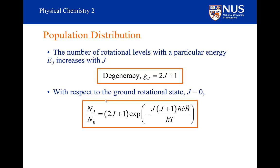So therefore, the ratio between Nj, the number of molecules in the j-state, to N0, the number of molecules in the ground state, is going to be equal to 2j plus 1 times the exponential of minus j into j plus 1 h c tilde B tilde, this is the energy difference between the j level and the j equals 0 level, over kT.